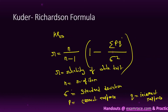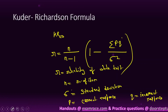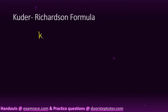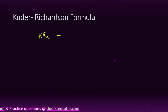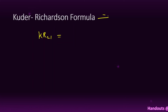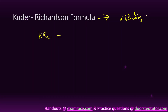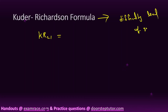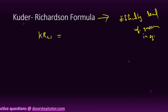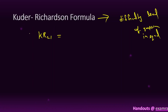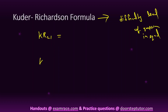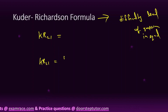The next formula is KR-21. One assumption related to KR-21 is that this formula is used only when the difficulty level of questions is equal. In reality it is not always possible that difficulty levels are equal, but in some cases they are, and in that case KR-21 is used.